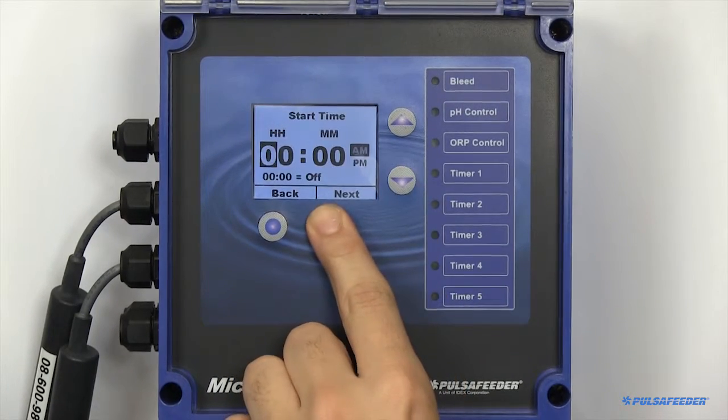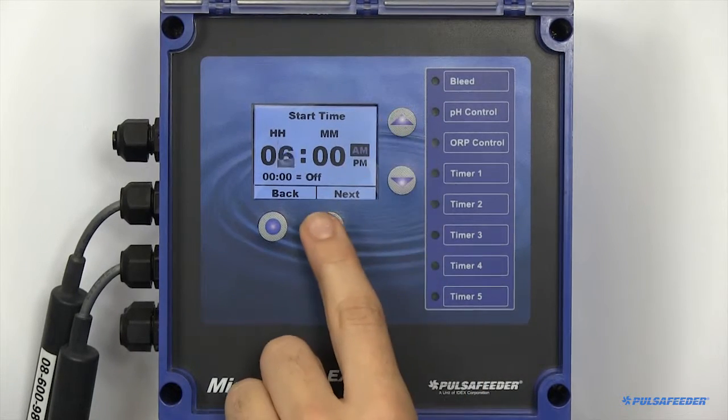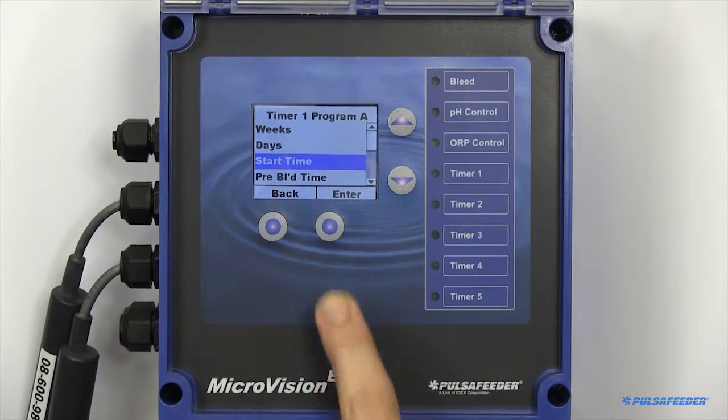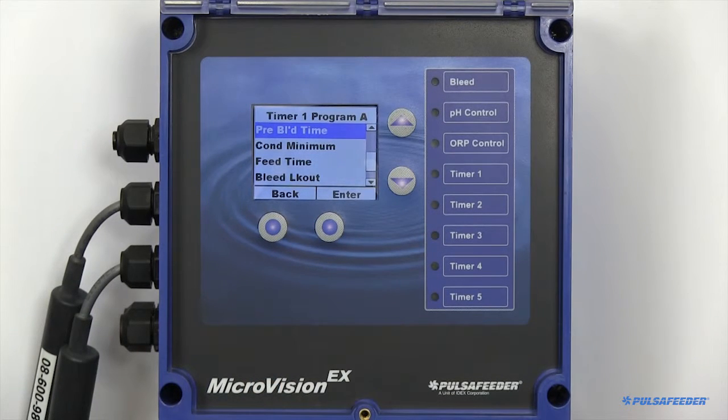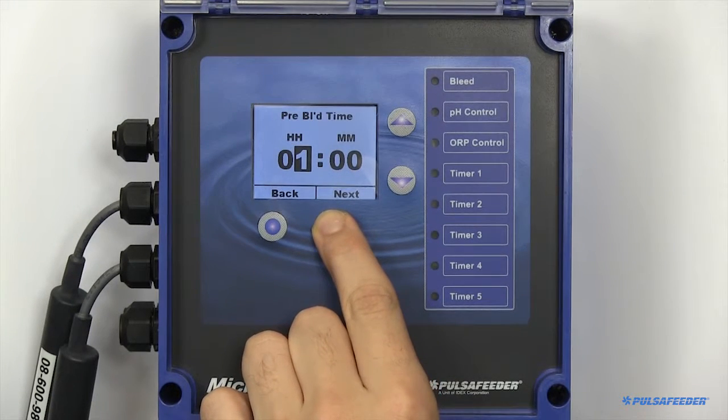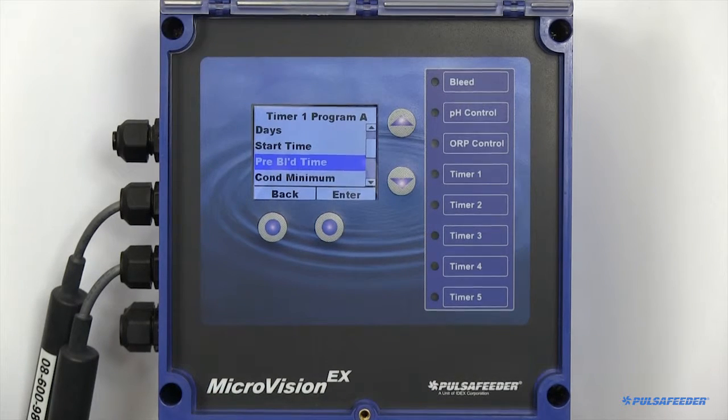The start time is when you would like to either begin your feed cycle or a prebleed, if applicable. A prebleed time is the maximum amount of time you would like the bleed function to be force enabled prior to a feed cycle.